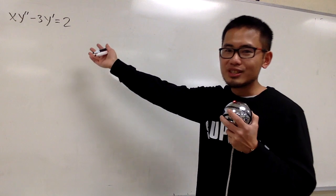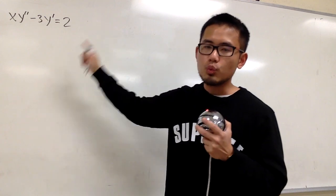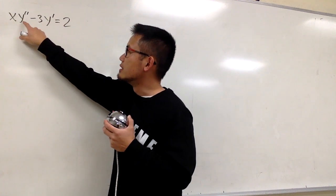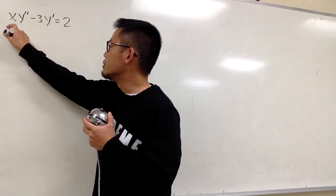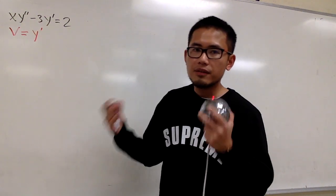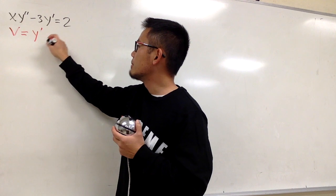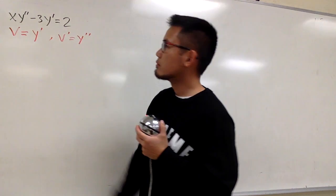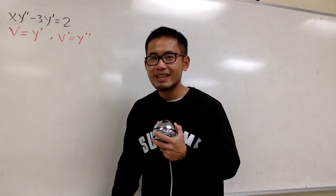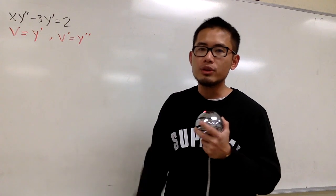I haven't shown you how to solve things like this, but we can look at this and do some substitution, and we'll be able to change this into a first-order linear differential equation. Because we have y prime and y double prime here, as long as I do some substitution — let me call this phi — I want phi to equal y prime. So let phi equal the first derivative of y. When I do this, y double prime is nothing but phi prime, because if I differentiate phi, that becomes y double prime.